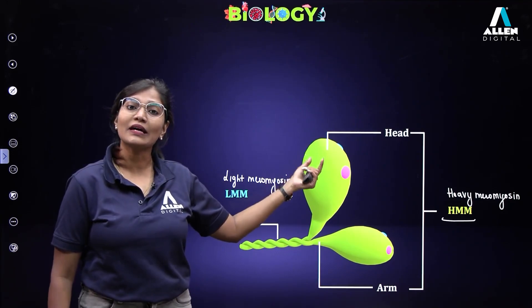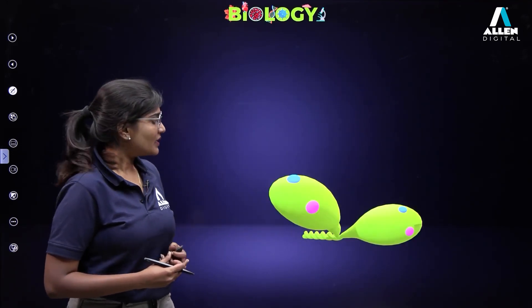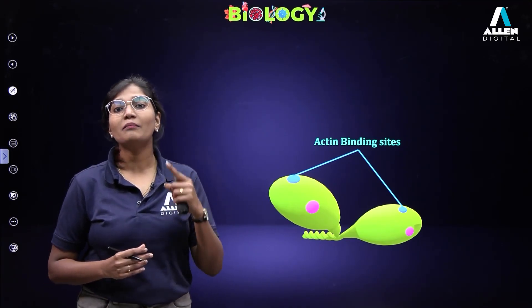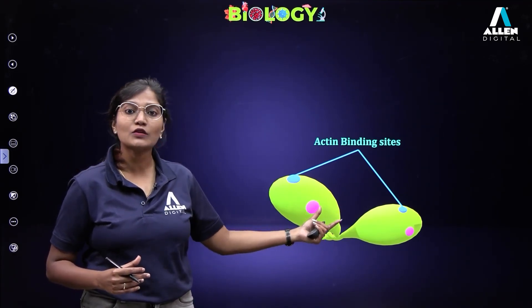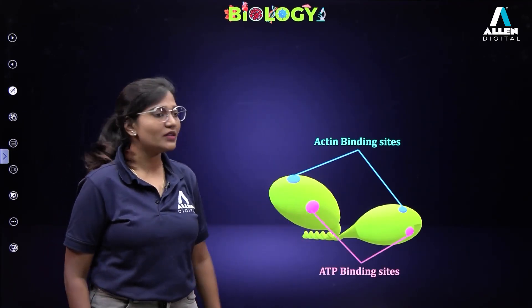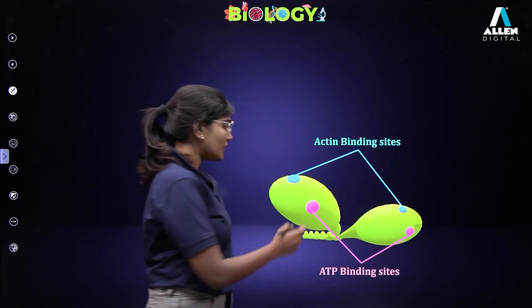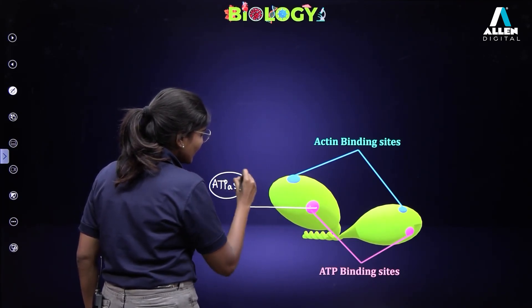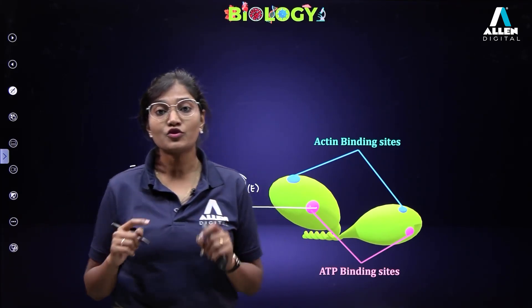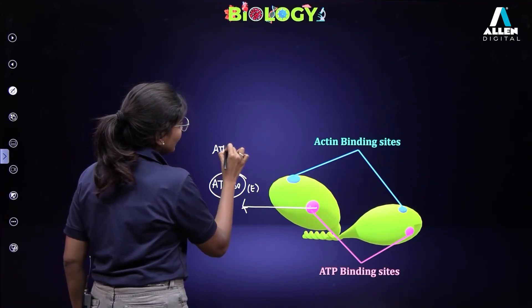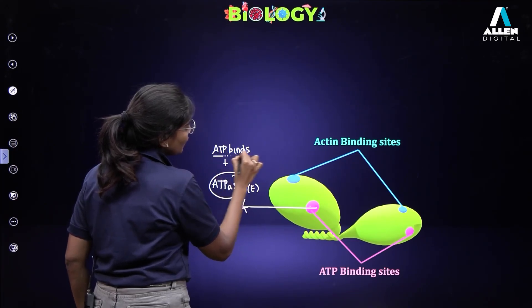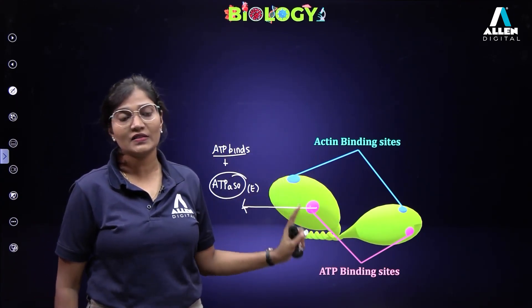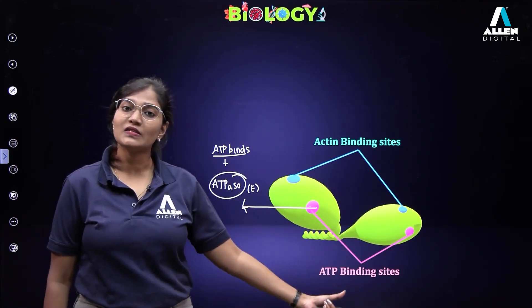There are two important sites in the meromyosin head. The first is the actin binding site — myosin has to go and fit to the actin. The second is the ATP binding site. The pink part refers to an enzyme called ATPase; ATPase will always bind with its substrate ATP. So the topmost portion is the actin binding site and the bottom portion is the ATP binding site or ATPase.